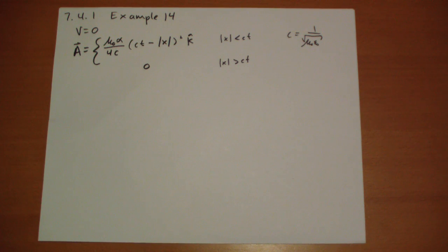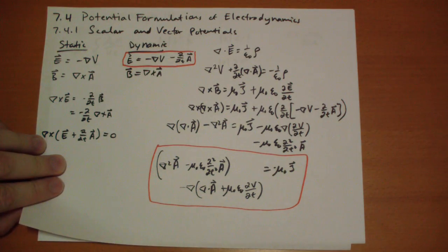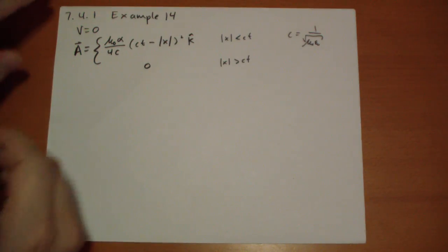To calculate the fields we just apply the equations we just learned. E is the negative time derivative of A. Because V is zero, we're not going to get a gradient. So let's start with that.